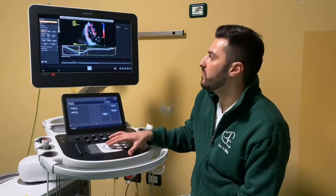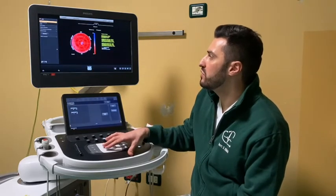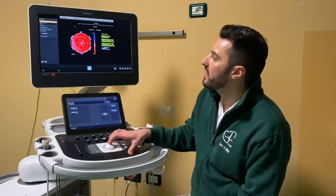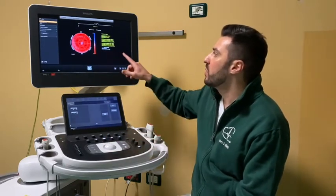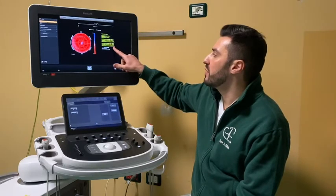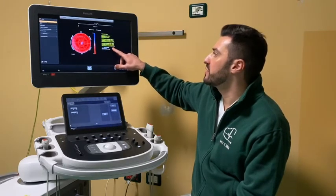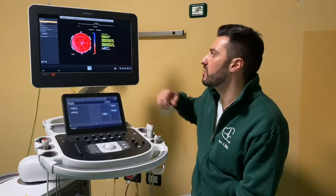In the end we will have a bullseye that reflects all the segments of the left ventricle, with a sum of these values which is the GLS, the global longitudinal strain.